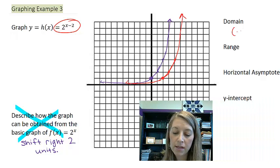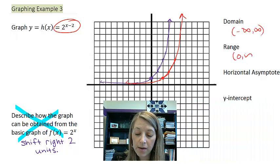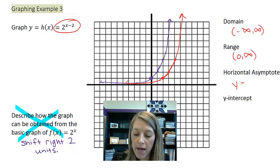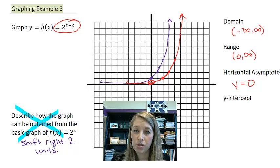And so here is going to be my new function of 2 to the x minus 2. Notice my domain stays the same. My range stays the same. My horizontal asymptote is still the same. My intercept is different.